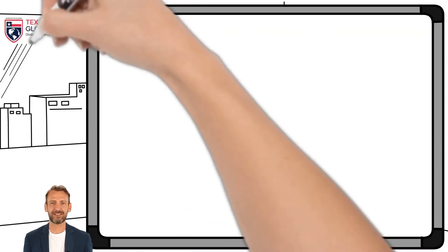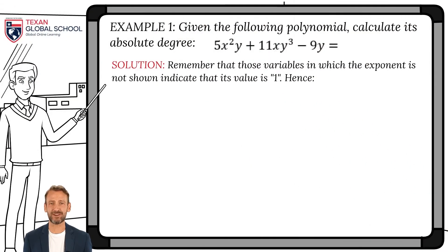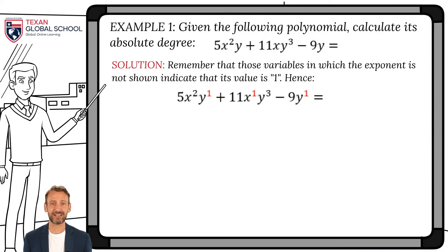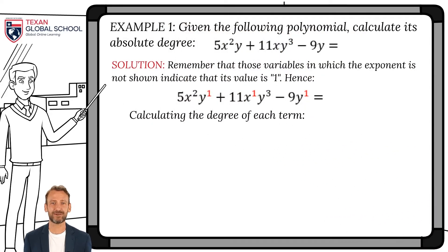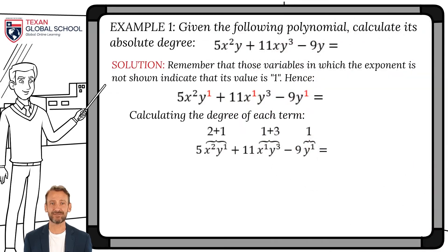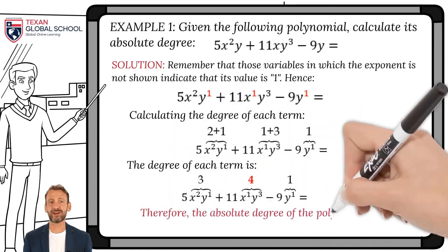Let's look at the first example. Given the following polynomial, calculate its absolute degree. Remember that variables in which the exponent is not shown indicate that the exponent value is 1. We highlight them in red to make it easier to calculate each term by adding the exponents. After adding the exponents separately, we can see that the maximum value is equal to 4. We conclude then that the absolute degree of this polynomial is 4.